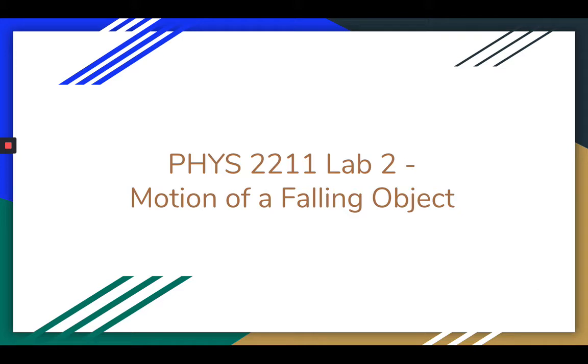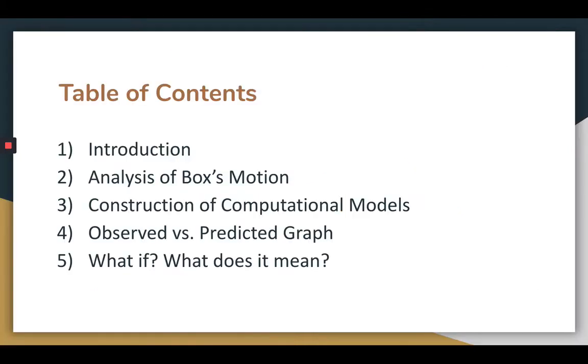This lab examines the motion of a falling object. I'll first introduce this system, its surroundings, and some key ideas and formulas relevant to the lab. I'll then analyze the motion of the box and discuss two computational models I used to predict its motion. This will be followed by a comparison of the graphs obtained from these three sources. And finally, I'll answer some essential questions about the lab.